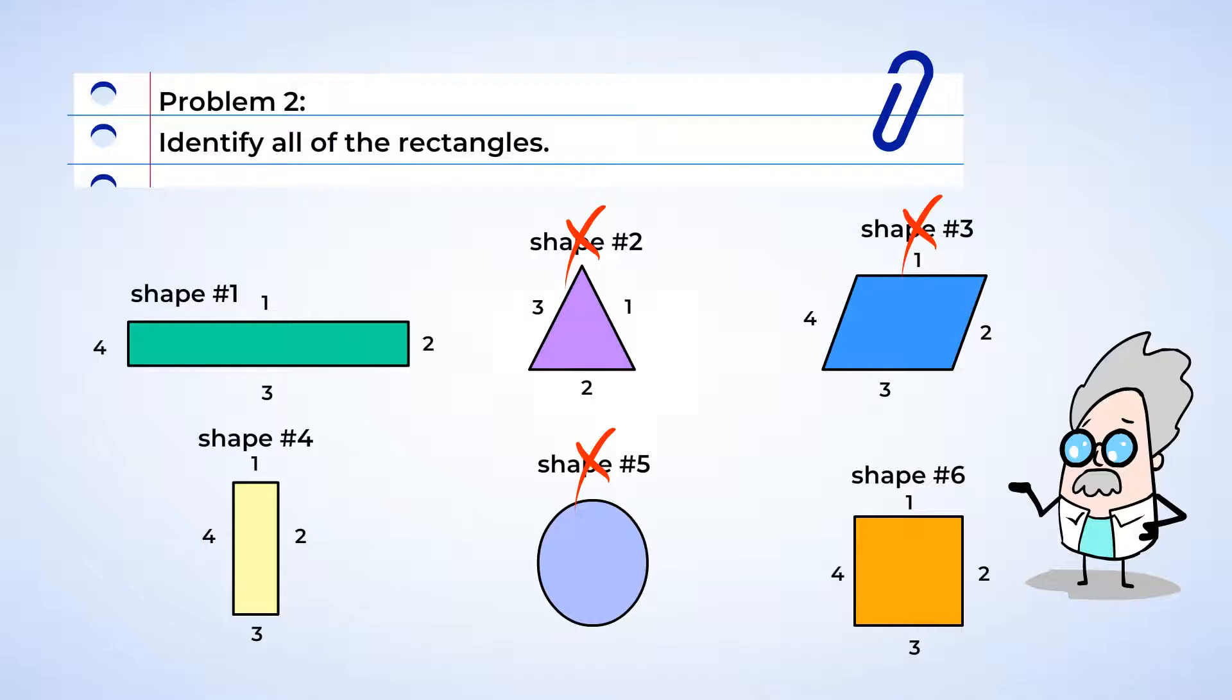And what about shape 6? This one looks like a square. Oh yeah! A square is a special rectangle where all sides are equal lengths. And that means we're going to keep shape 6. So it looks like we identified all of the rectangles. Shapes 1, 4, and 6.